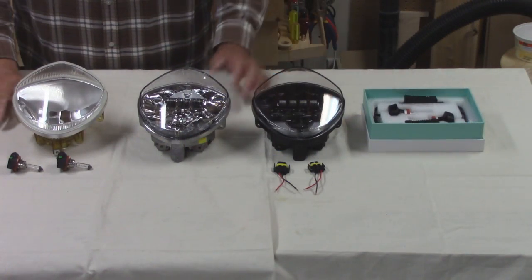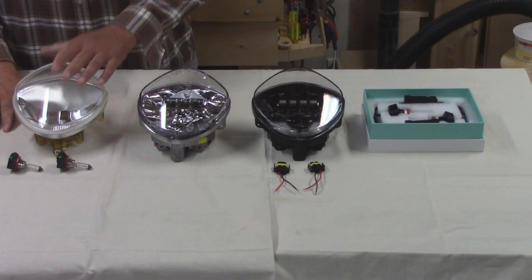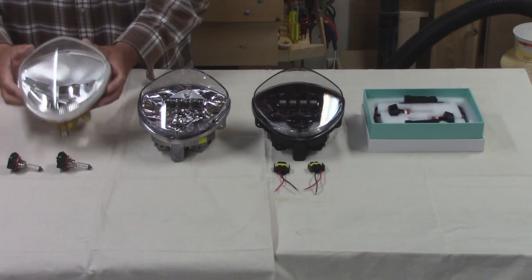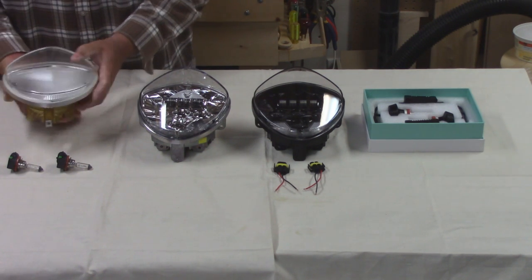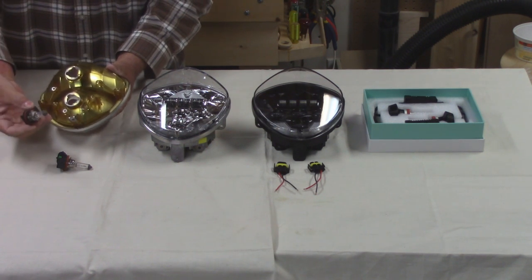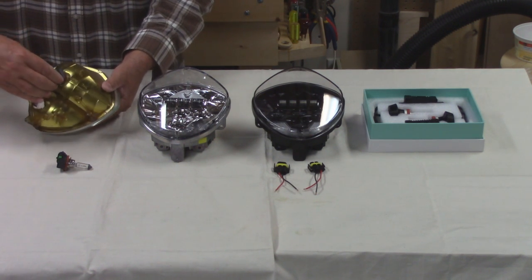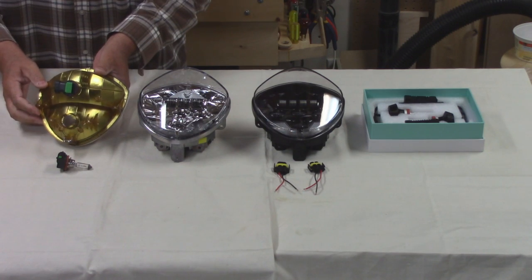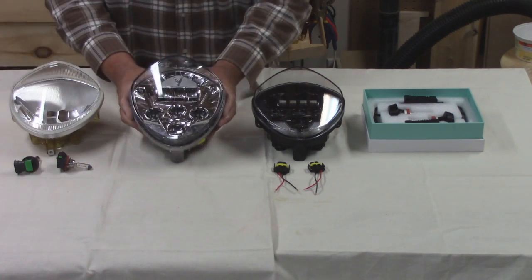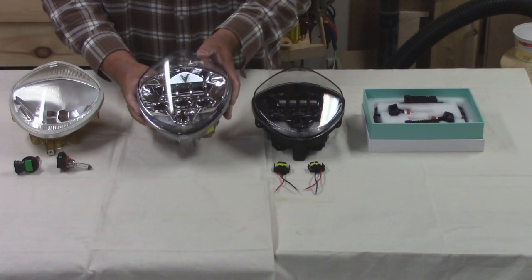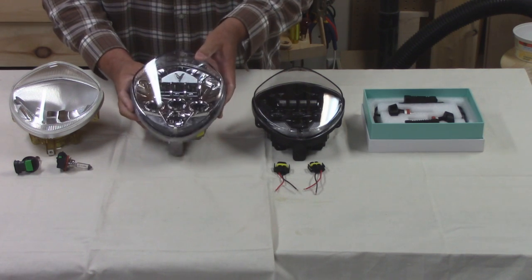So these are the lights that I'm going to be demonstrating today. The first one is my stock OEM light fixture that came with my Cross Country Tour. It uses the halogen bulbs and you simply put them in, lock them down and plug them in. The next one is the Victory Beacon LED light in chrome.